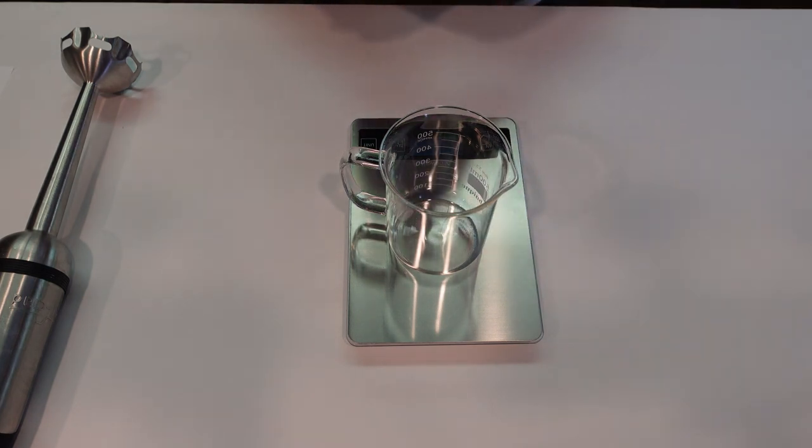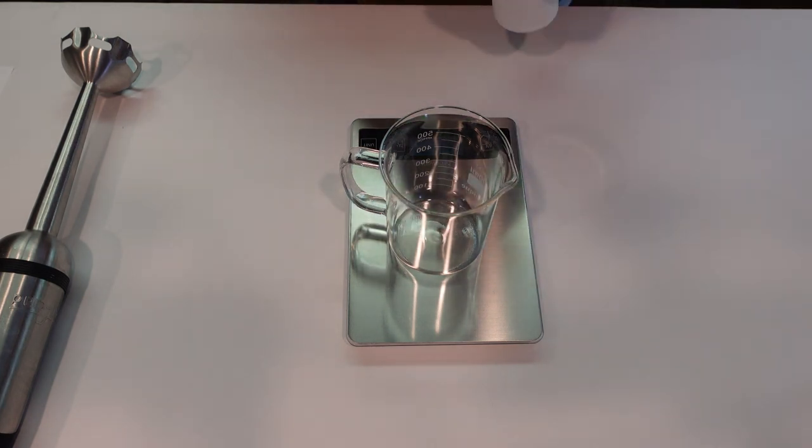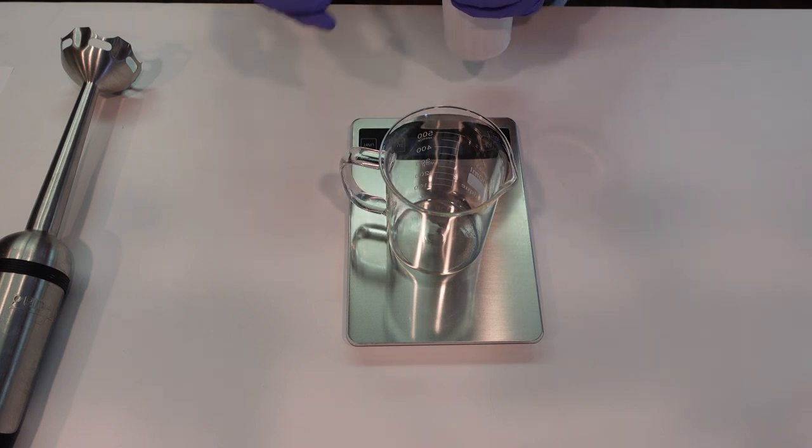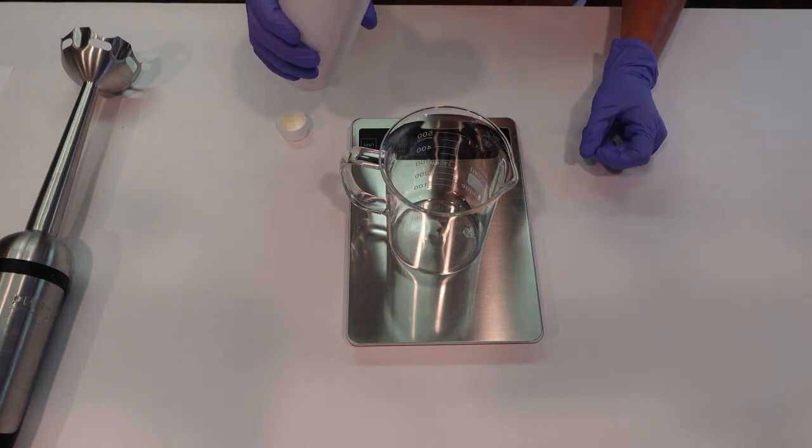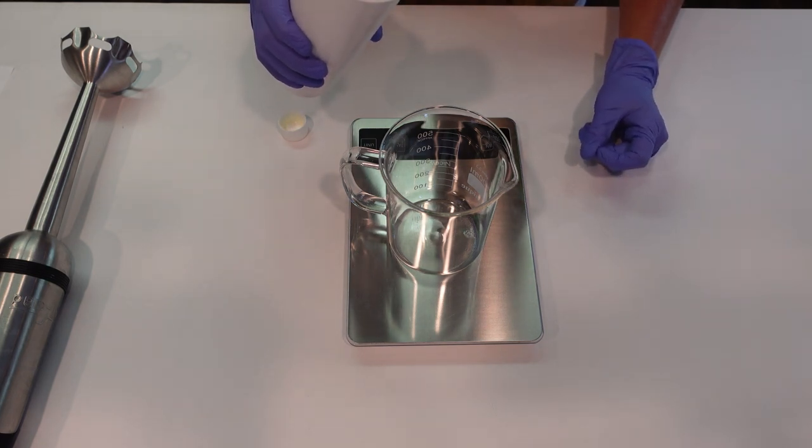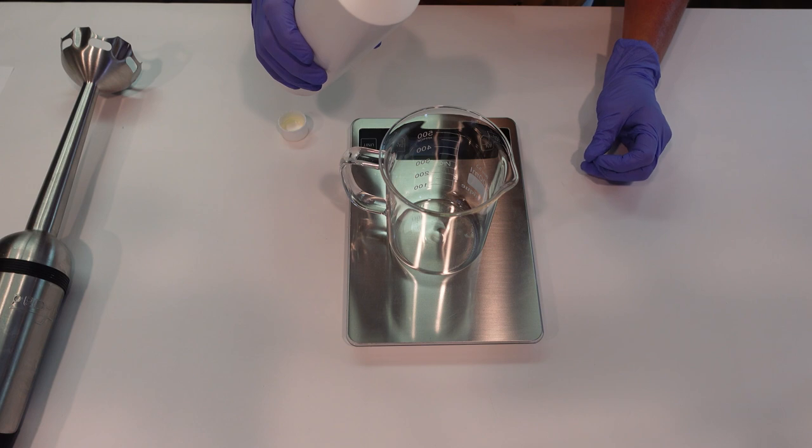The first thing we're going to do is weigh off some jojoba oil. Jojoba oil is a very luxurious oil. It's very, very close to our own skin sebum. It's actually a wax but we call it an oil. It's golden in color, it absorbs very easily into the skin, it's lightweight and just has a very, very good emolliency to it.